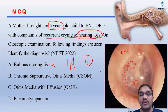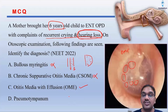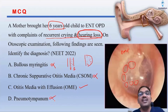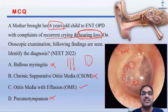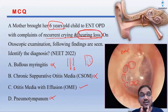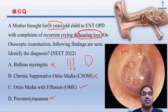Here there is no perforation seen, so this is not the diagnosis. What is pneumotympanum? I don't think there is any word like pneumotympanum — tympanum means middle ear, and normally the substance present in the middle ear is air only. So pneumotympanum is just normal terminology; there is no such word that exists. So the answer here will be otitis media with effusion.